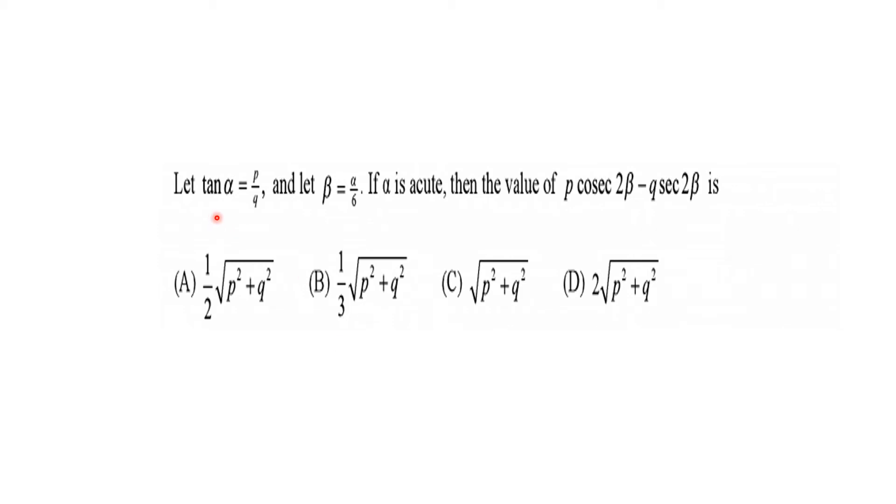Here we have tan α = p/q and β = α/6, where α is an acute angle. So we have to find the value of p·cosec(2β) - q·sec(2β). Let's see how we can do this.